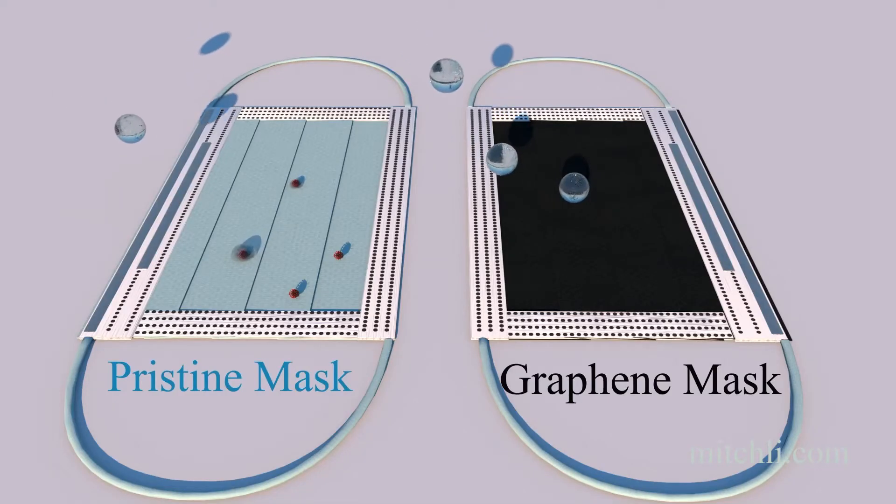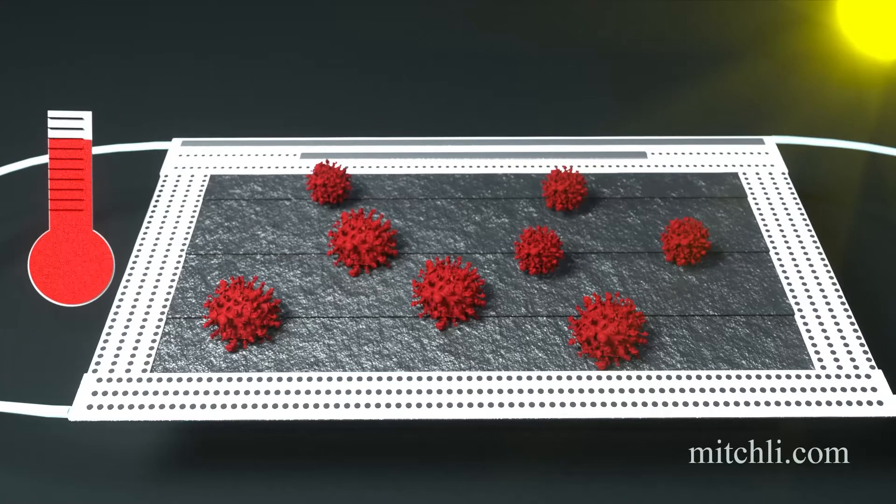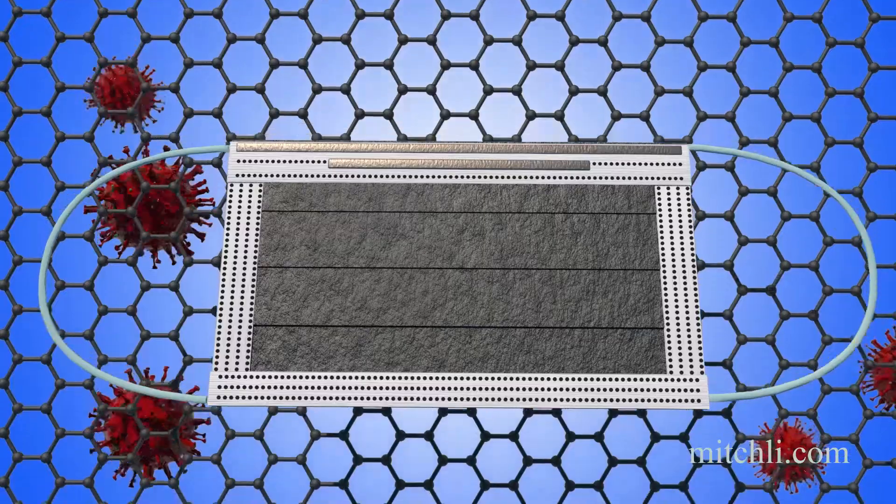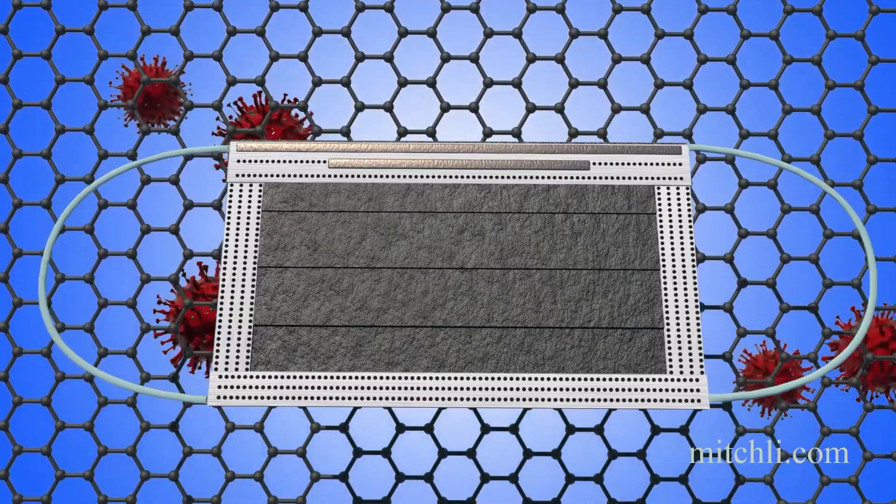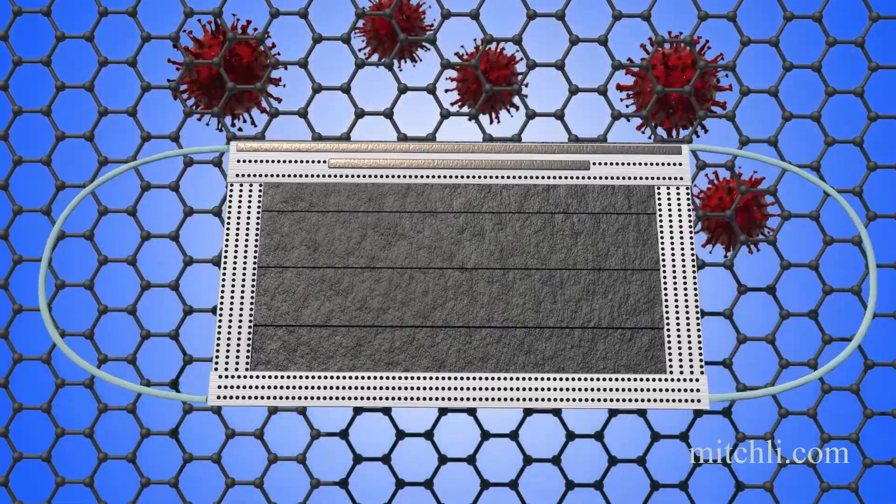The respiration droplets have lower chance of attaching on the superhydrophobic graphene masks. Sunlight can heat the graphene mask over 80 degrees Celsius to deactivate the remaining viruses. So the photothermal and superhydrophobic graphene masks can provide better protection toward COVID-19.